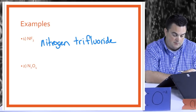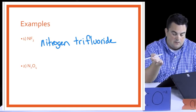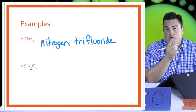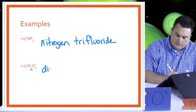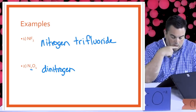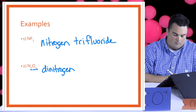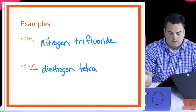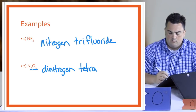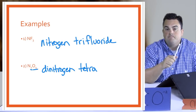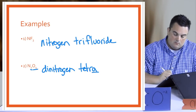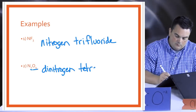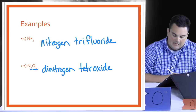Our second example is N₂O₄ — both nonmetals, so covalent bonding and molecular rules apply. There are two nitrogen atoms, so the prefix is di: dinitrogen. There are four oxygen atoms, so the prefix is tetra, and oxygen becomes oxide. When the prefix ends in A and the element name begins with a vowel, we drop the A: so tetra + oxide becomes tetroxide. The final name is dinitrogen tetroxide.